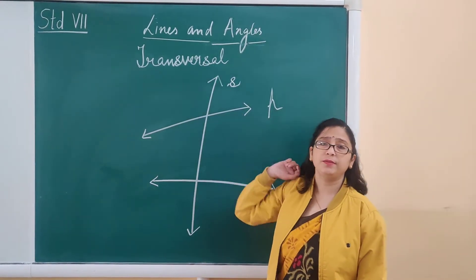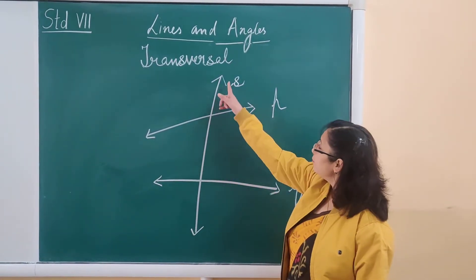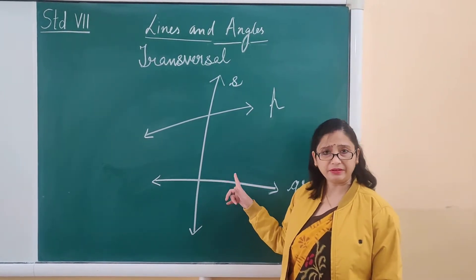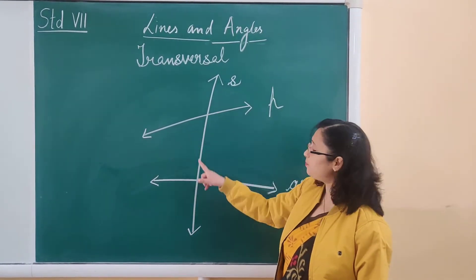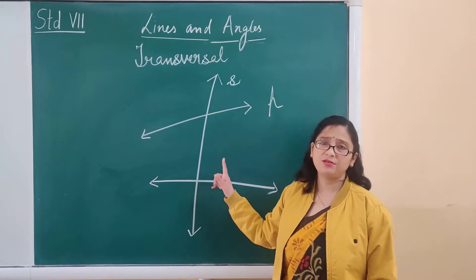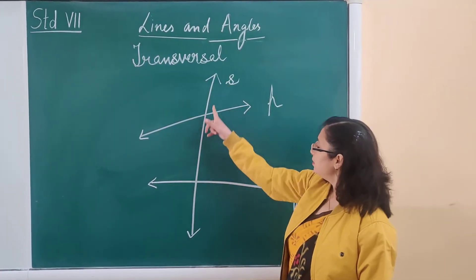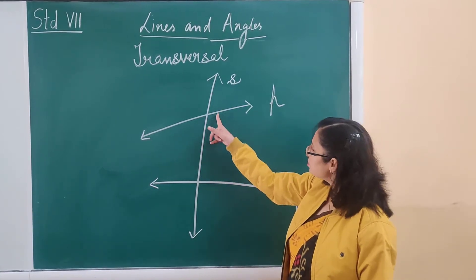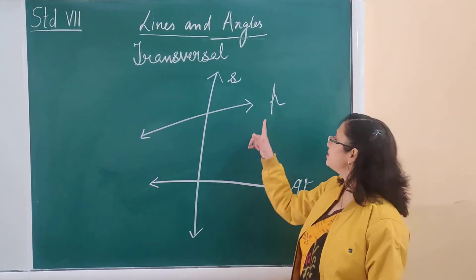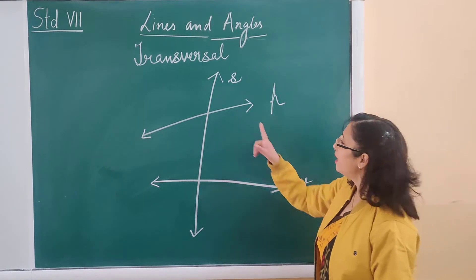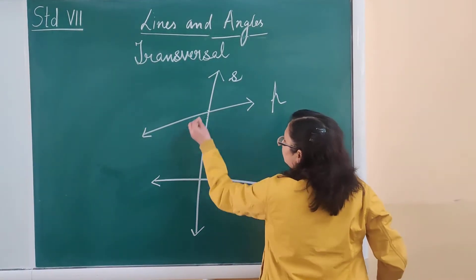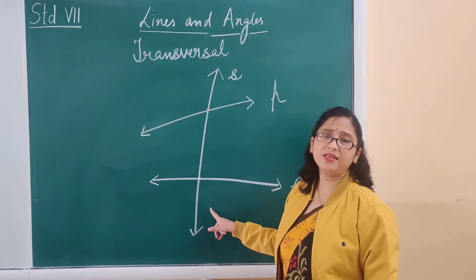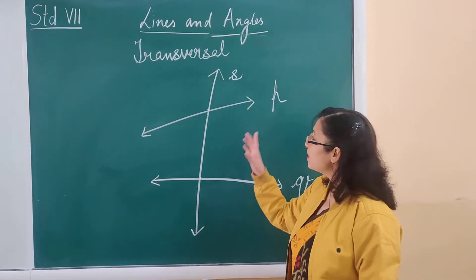The topic is transversal. A line which intersects two or more given lines at different points is known as a transversal. Here, S is intersecting two non-parallel lines, P and Q, at two different points. So S is the transversal.